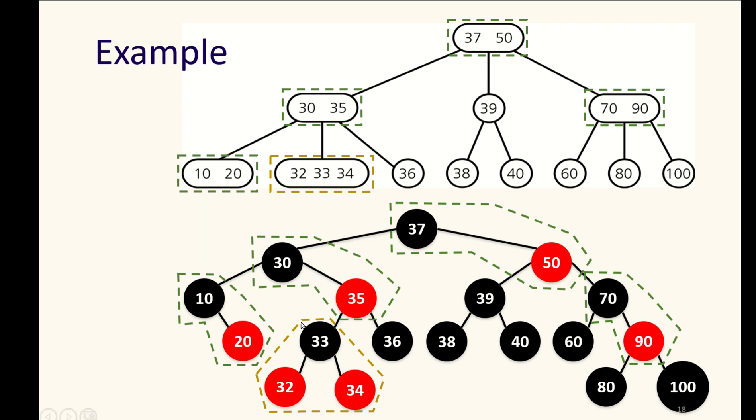This 32, 33, 34 grouping does map, but 30, for example, has both left and right children, but one of its children is a red node and the other child is a black node. So it corresponds to a three node.